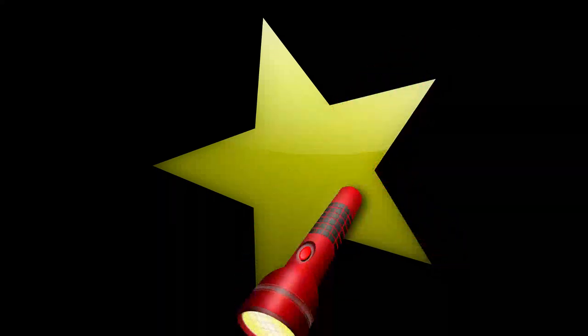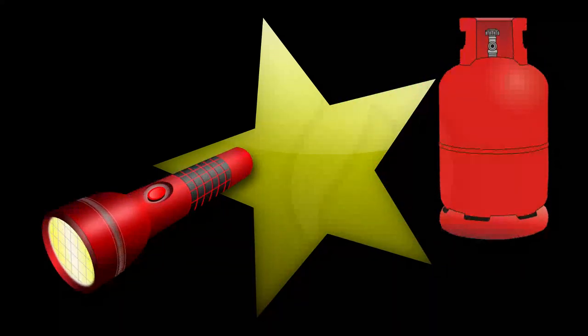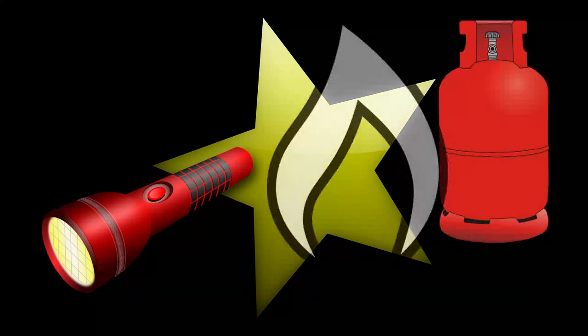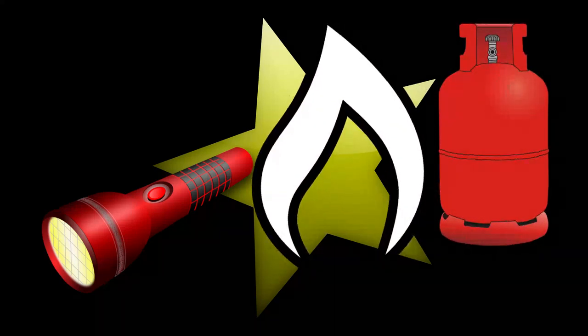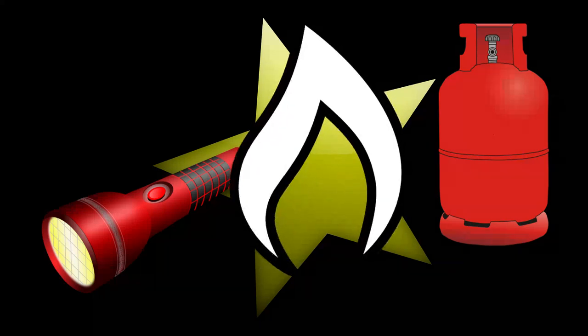There are many elements that make up a star, whether it be the basic idea of a star or something else. When it comes to the star that we must think about, there are three main elements that make it up, and those include light, gas, and heat — represented here as a flame, gas can, and a lantern or flashlight.